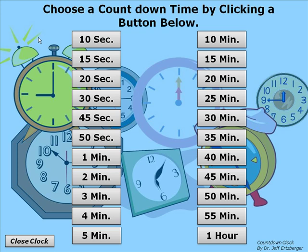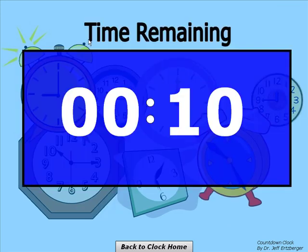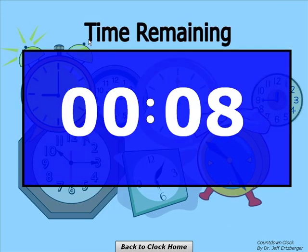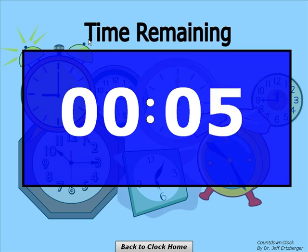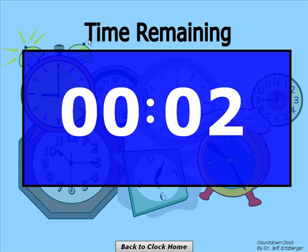The countdown clock is a very simple utility. Basically, you put it up on your screen or your TV and click on the number of seconds or minutes that you would like the clock to count down. For example, I'll choose 10 seconds and it's going to count down on my screen from 10 to 0. When it gets to the bottom, it'll make an alarm.